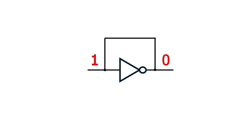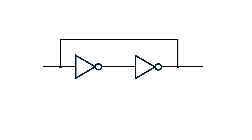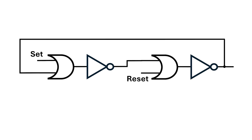We want to store information, so we need to add a second inverter where the output of each inverter is connected to the input of the other inverter. This configuration has two stable states: 0110 and 1001. The circuit will stay in one of these conditions indefinitely — at least as long as power is applied. But we need to add in another couple of gates to let us change between these two configurations.